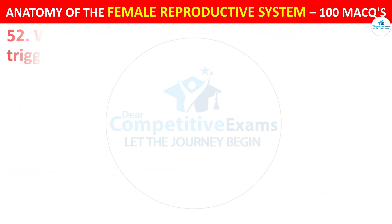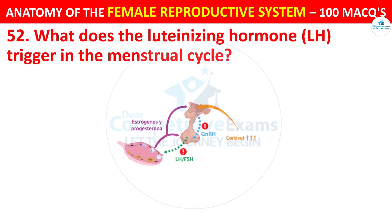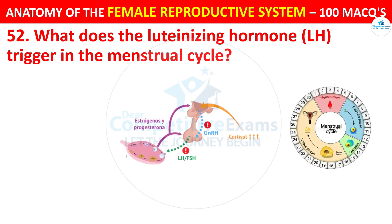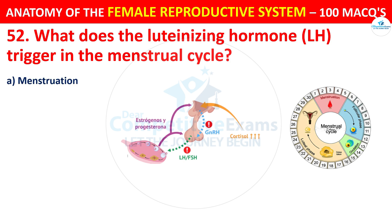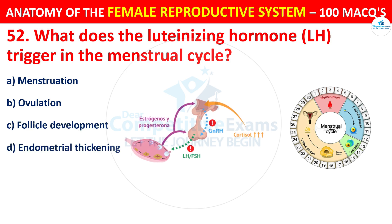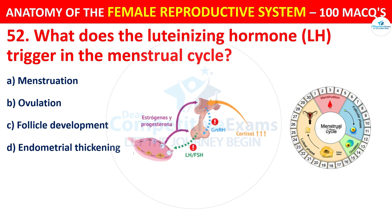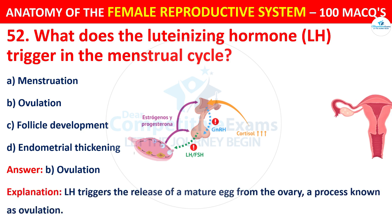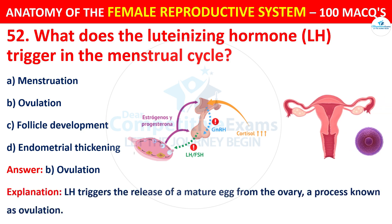Question number 52. What does the luteinizing hormone LH trigger in the menstrual cycle? Your options are: menstruation, ovulation, follicle development, or endometrial thickening. The correct answer is B — ovulation. Luteinizing hormone LH triggers the release of a mature egg from the ovary, a process known as ovulation.